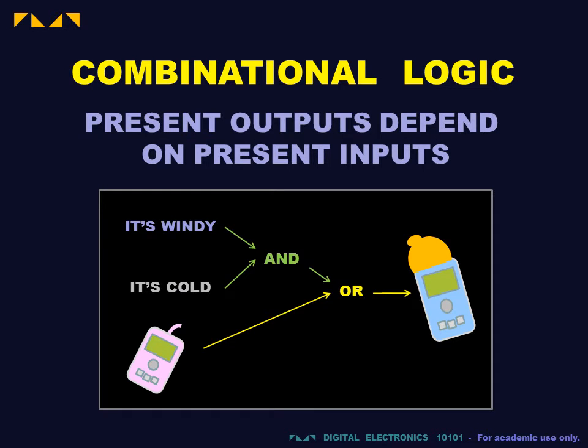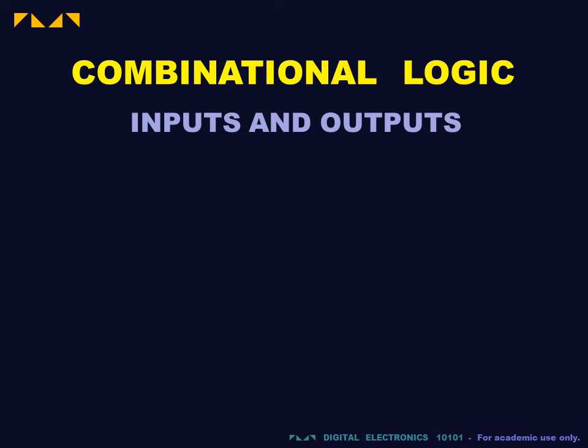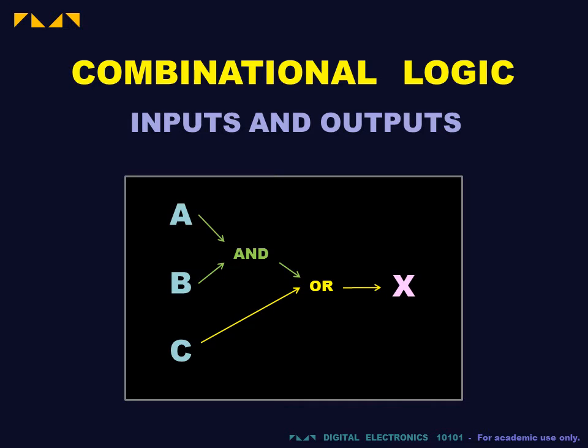In previous videos we presented this form of logic as a logic tree. In this video we will introduce the conventional tools for presenting and analyzing this logic. Each input and output is represented by a short label. As we begin we will use single letter labels A, B and C for inputs and X, Y and Z for outputs. As we proceed we will use labels that are more self-explanatory.